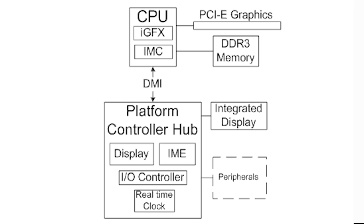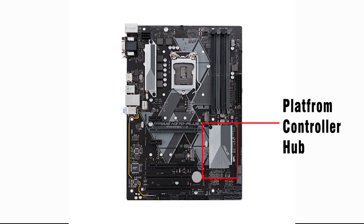The Southbridge became redundant and was replaced by the Platform Controller Hub (PCH). The PCH controls certain data and support functions used in conjunction with the CPU. All Southbridge features and remaining input/output functions are managed by the PCH, along with PCIe ports, the management engine, and the display controller for integrated graphics. Two different connections exist between the PCH and the CPU: the Flexible Display Interface (FDI), used when supporting a processor with integrated graphics, and the Direct Media Interface (DMI), which directly connects the PCH to the CPU.